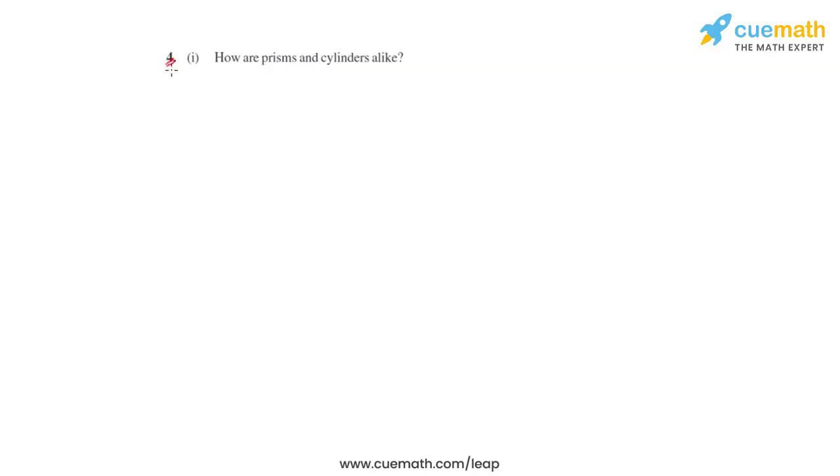In question number 4 of this third exercise, we have taken the first part of this question first, where we will have to observe how prisms and cylinders are alike. Now let us first list down the properties of a prism to understand this question.